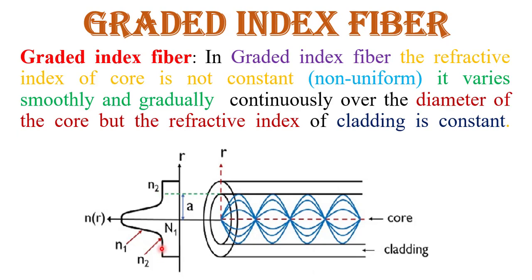Here, N1 represents the refractive index of the core, which is non-uniform, not constant, and continuously varying. N2 represents the refractive index of the cladding, which is constant and uniform throughout the cladding. Nr is the refractive index profile of that particular fiber. R is the radial distance from the center of the fiber, and A is the radius of the core.